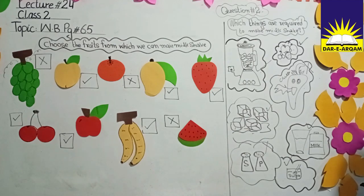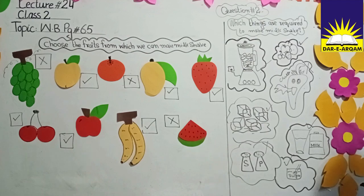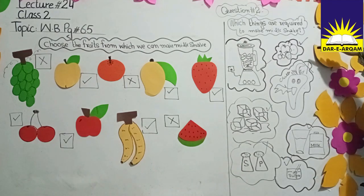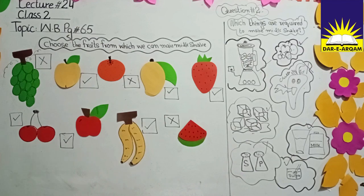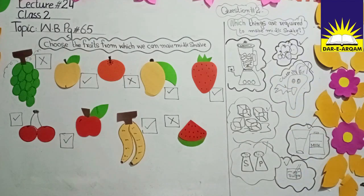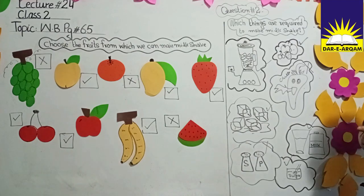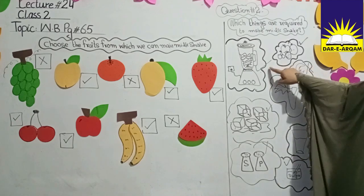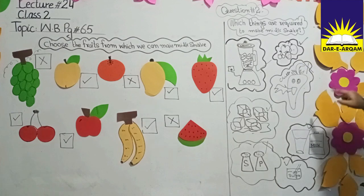This is our lecture number 24 — our last lecture, based on an activity. In the first question we identified which fruits are suitable for milkshakes and which are not, and we crossed those. The ingredients required for a milkshake are: fruit, a blender or mixer, ice cubes, milk, and sugar. On your assessment sheet, color the fruits, tick the ones from which milkshake can be made, and cross those from which it cannot. Then tick the correct ingredients.